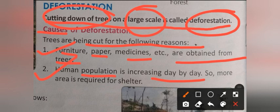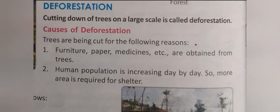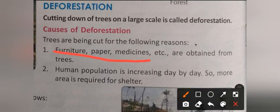More areas are required for shelter. Obviously if the population is growing, we need to be cutting down trees — this is the basic reason for deforestation. After cutting down trees, wood is used for furniture, paper, and medicine. The second reason is land required for shelter. Other main reasons include factories and land requirements.